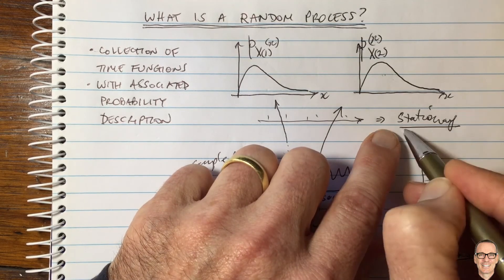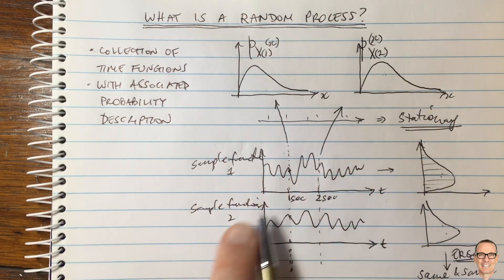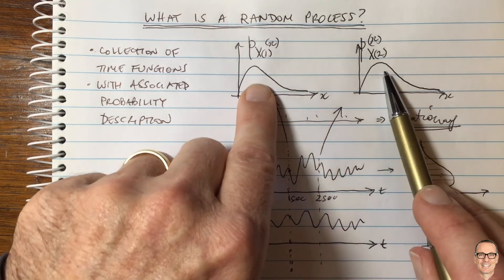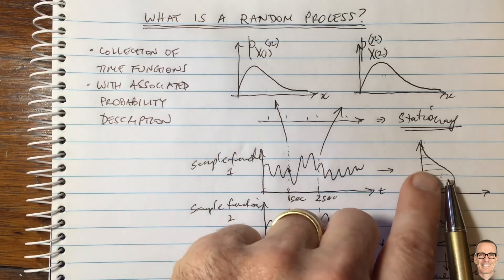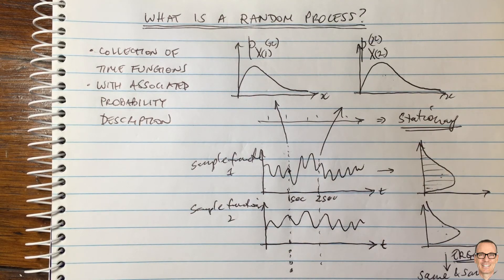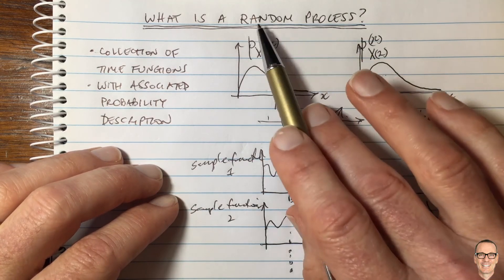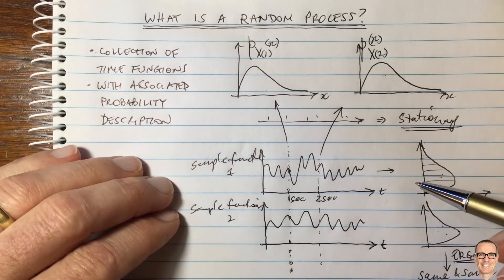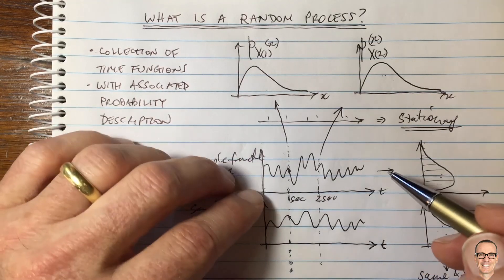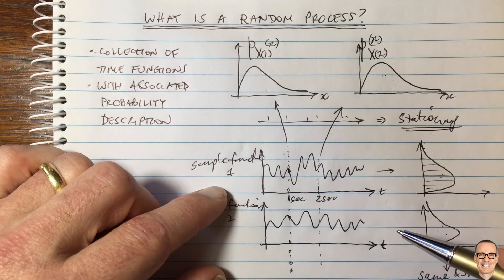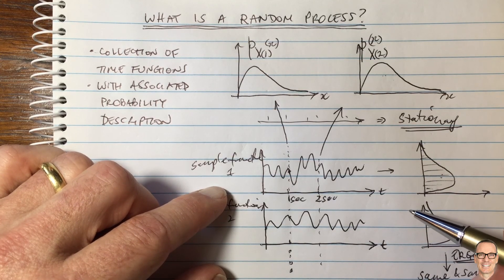If it is stationary, and if every single sample function has the same behavior as the ensemble — we call this the ensemble PDF, and this is the sample function histogram — then the process is ergodic. If this has helped you understand a bit more about random processes and random variables, please give the video a like and subscribe to the channel for more videos. Check out the website in the link below for a full categorized list of videos on the channel.